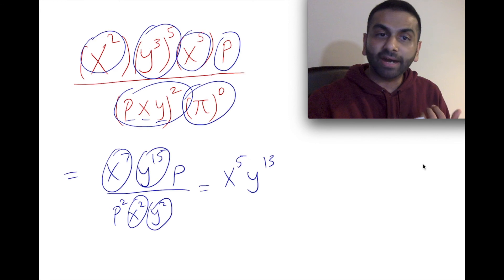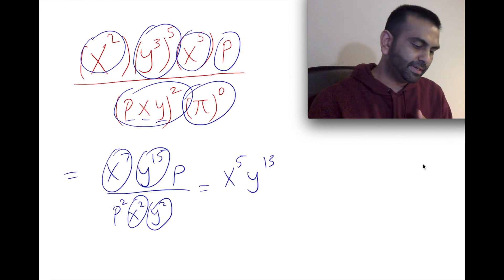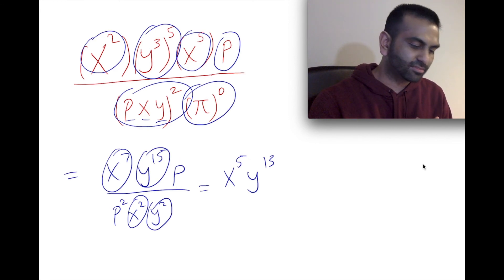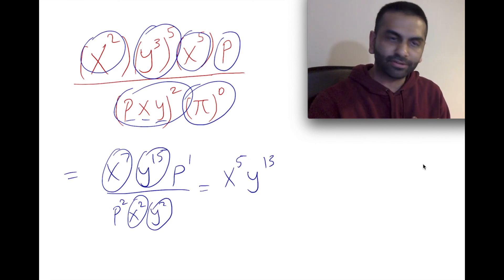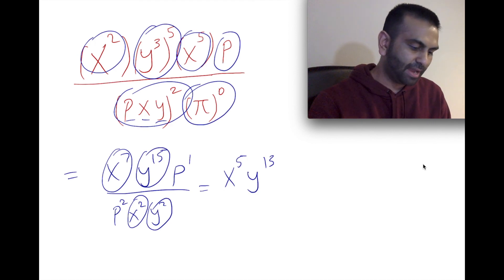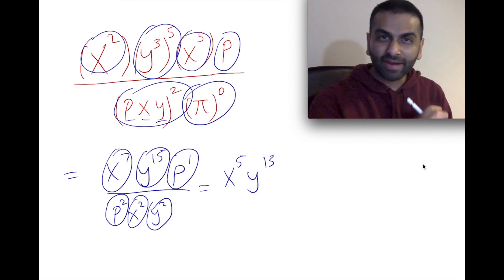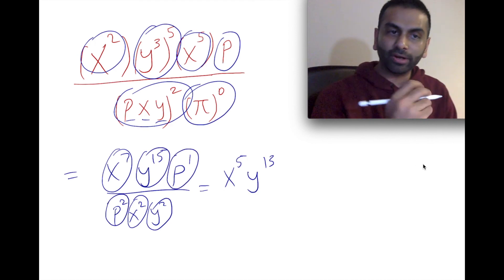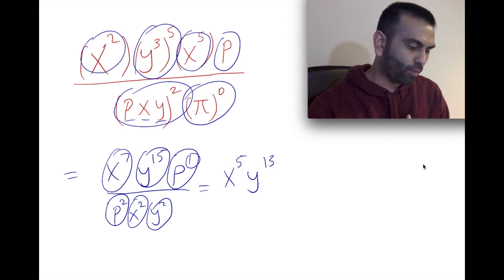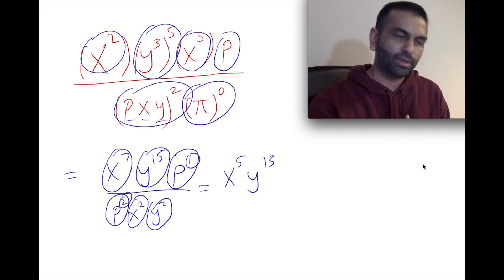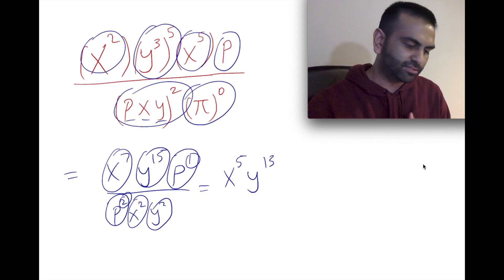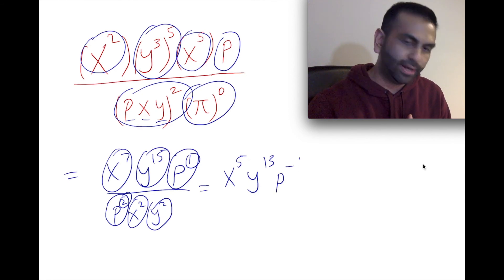Finally, let's look at p. Whenever there's no exponent written, it's really to the first power — so p to the first divided by p squared. Subtracting the exponents: one minus two equals negative one, so that's written as p to the negative one.